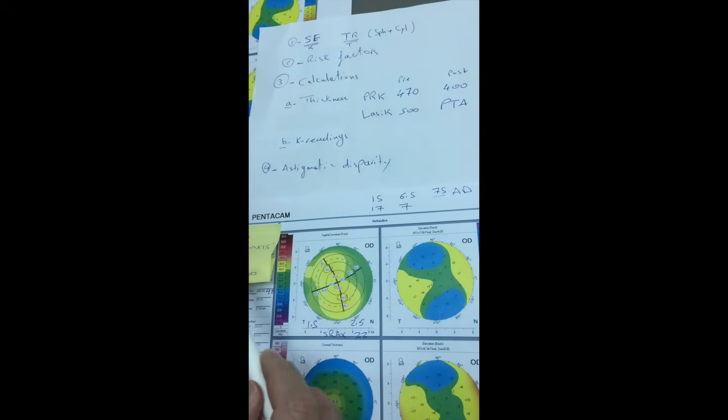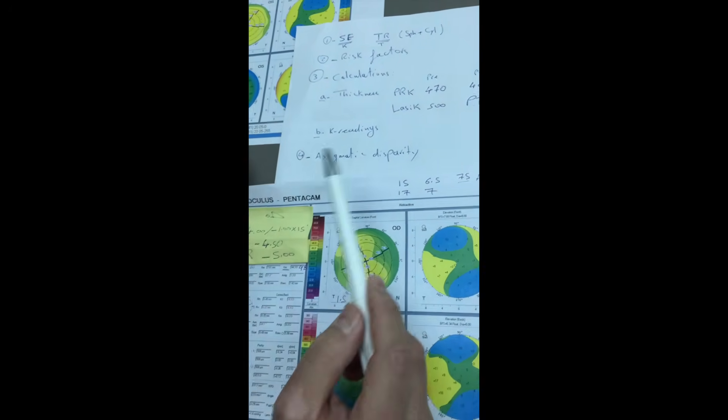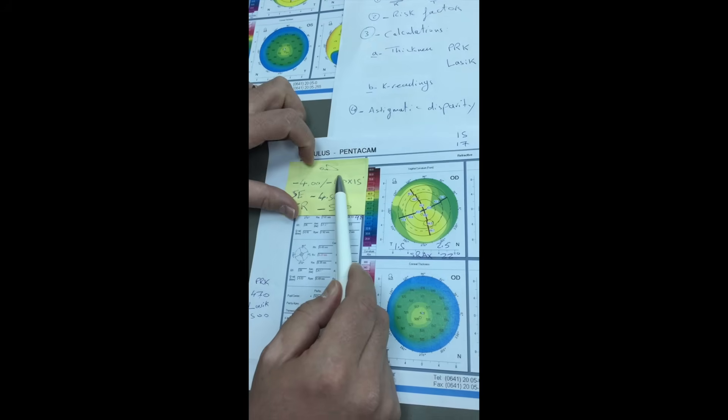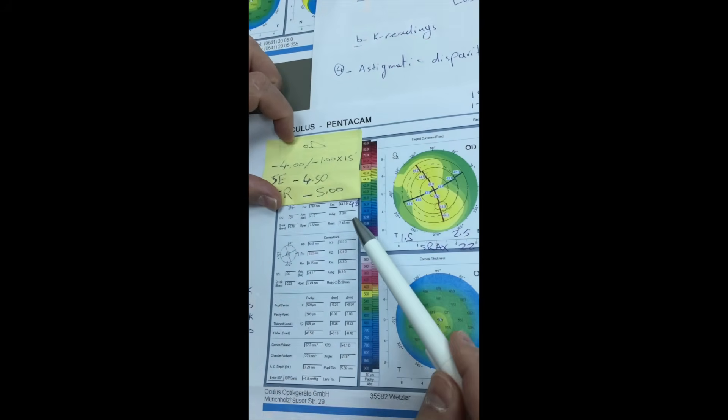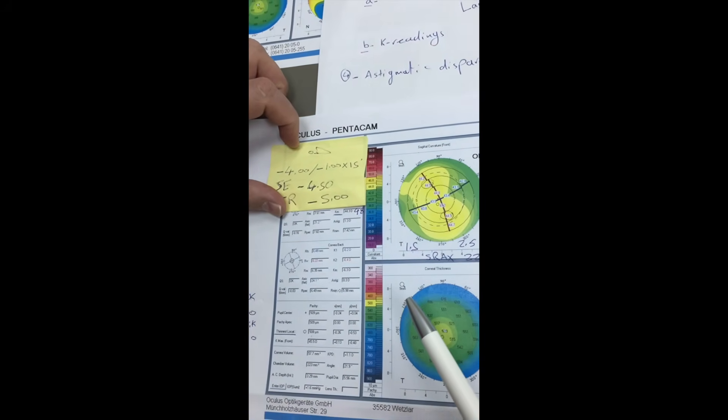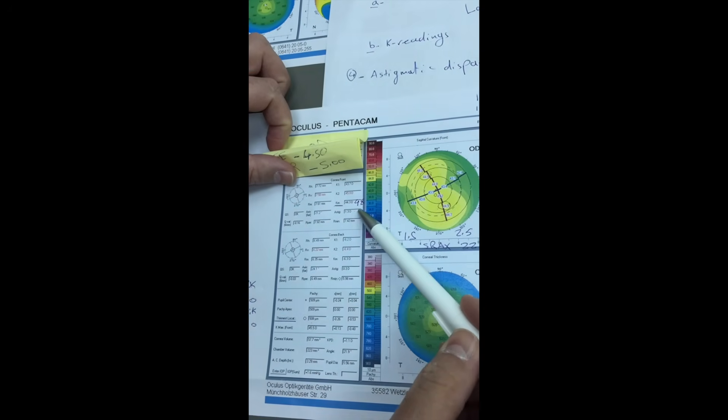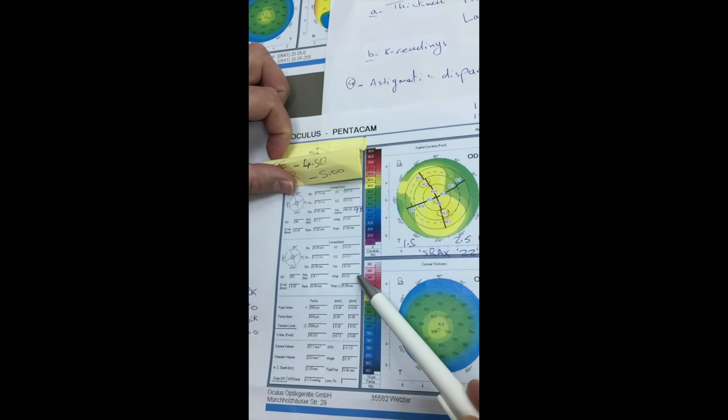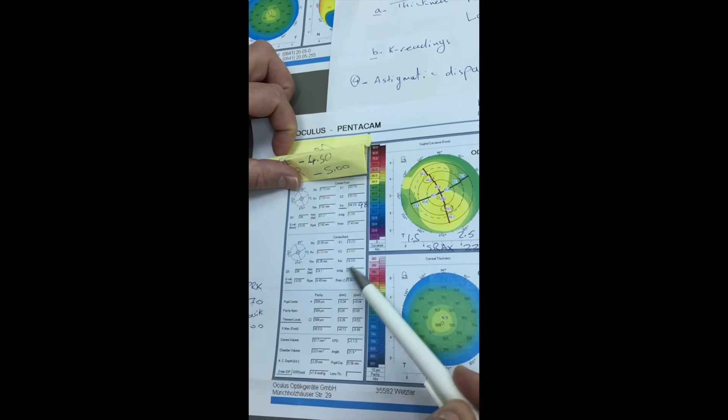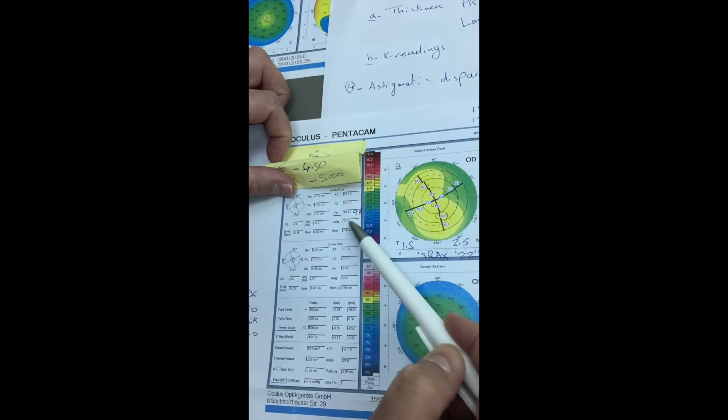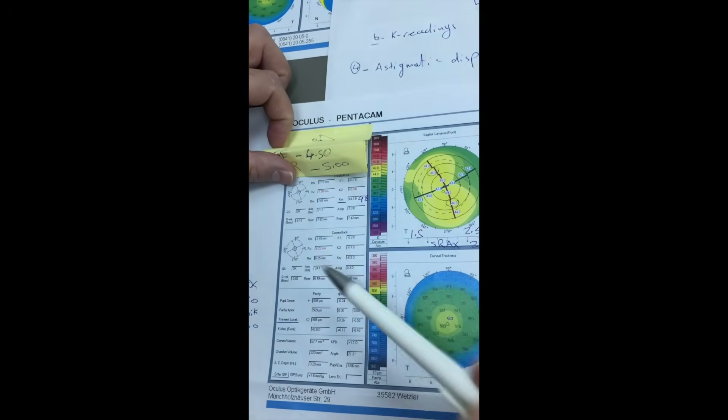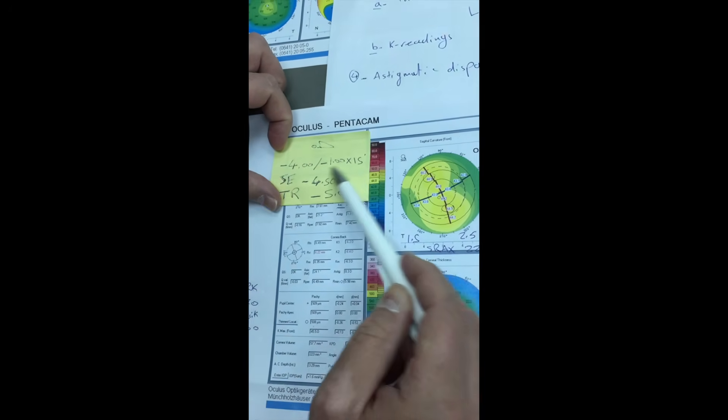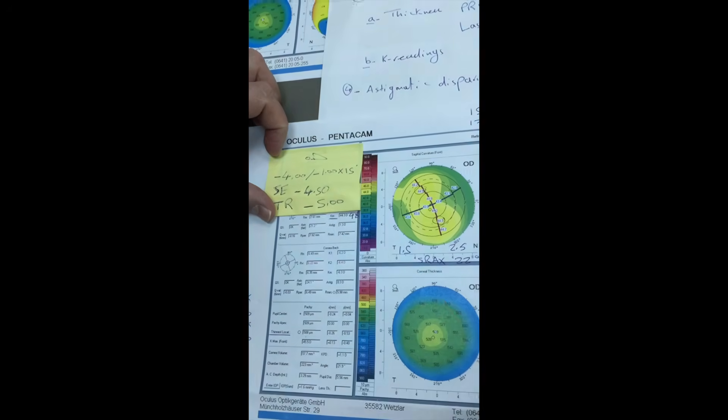We look at the astigmatic disparity. Astigmatic disparity is comparing the amount of manifest astigmatism with the corneal astigmatism. The corneal astigmatism can roughly be calculated by looking at the astigmatism on the anterior surface and the amount of astigmatism on the posterior surface. We deduct the one of the posterior from the one of the anterior and we can get a rough corneal astigmatism. So in this case, it is about one diopter, which is consistent with the one diopter of the manifest astigmatism.